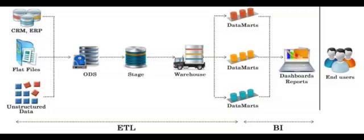The source systems include CRM (Customer Relationship Management), ERP (Enterprise Resource Planning), flat files, and unstructured data. CRM and ERP relate to structured data, flat files are semi-structured, and unstructured data can be social media data. From these sources, we extract and load data into the ODS — Operational Data Store — using an ETL mechanism.